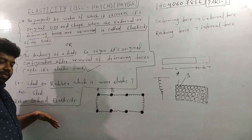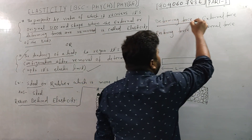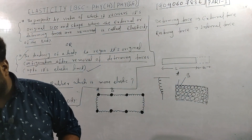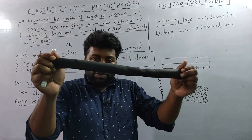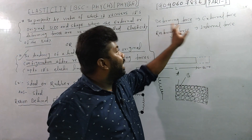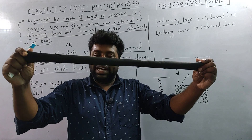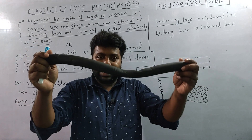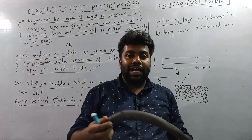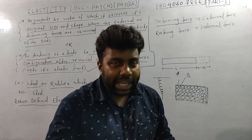The reason behind elasticity is important. The deforming force is any force that causes a change in the shape of the body. When you apply an external or deforming force, the body's shape changes. The body develops an internal restoring force that opposes the deforming force, and this internal force is what drives the body back to its original shape when the external force is removed.